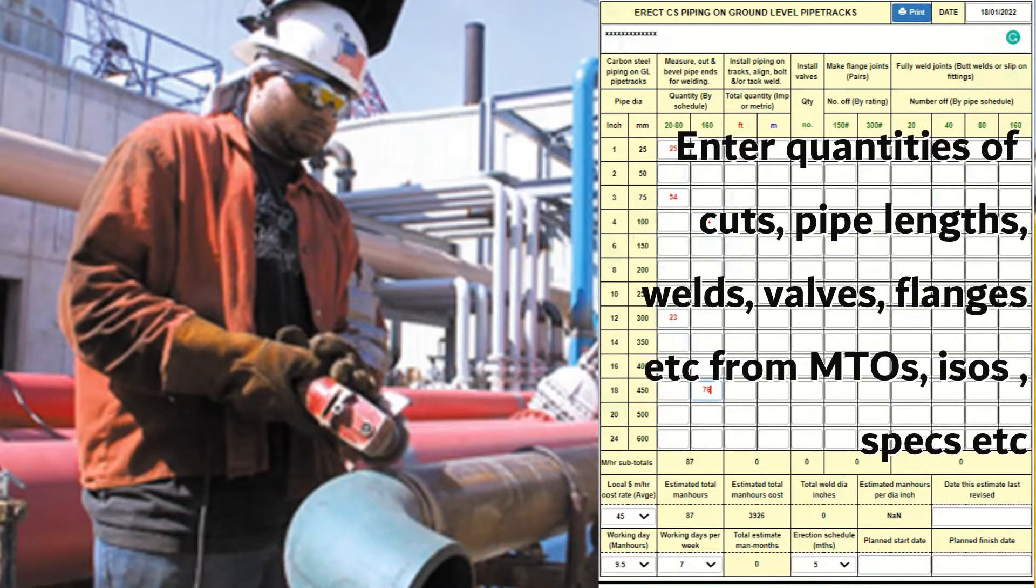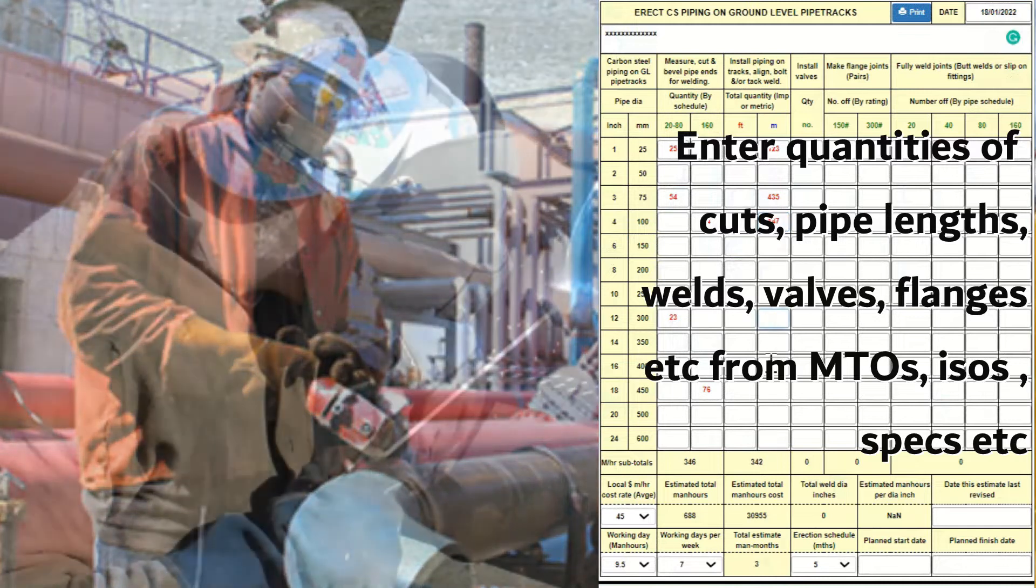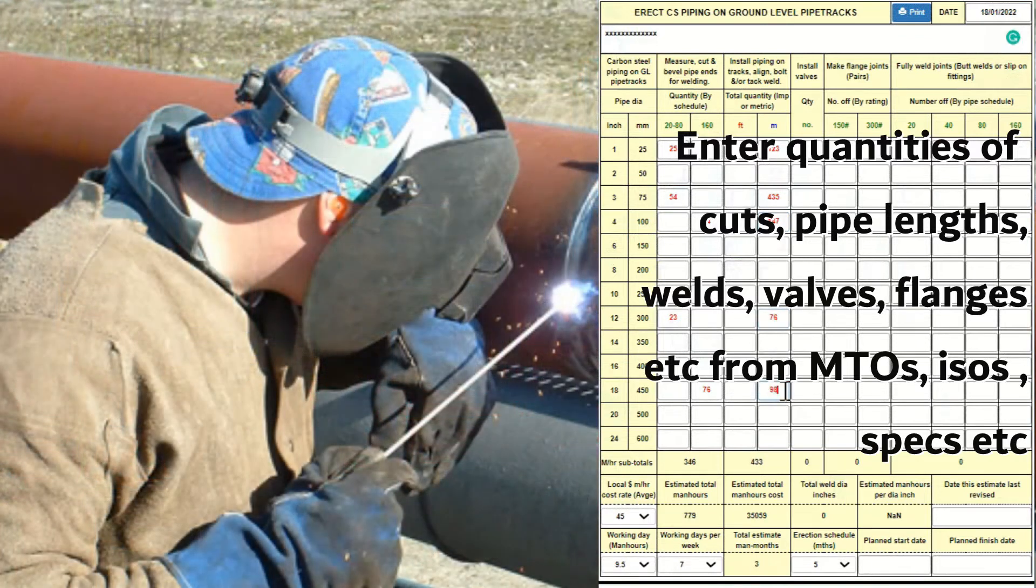We then go back up to enter quantities of pipe cuts and bevels, placing on tracks of pipe lengths and positioning of valves, tack welding of flanges or butts, fully welding or bolting, depending on line specifications, as partly indicated here by hypothetical numbers entered for this demo.